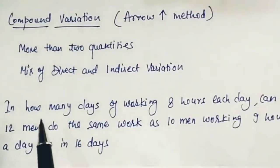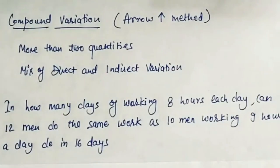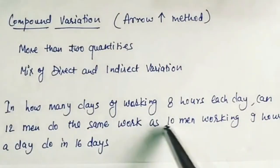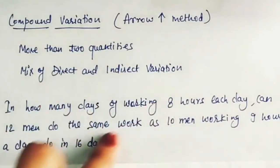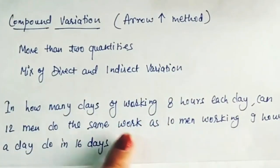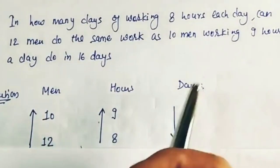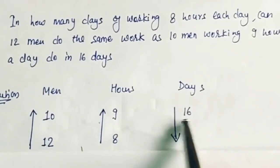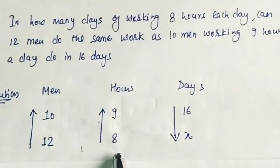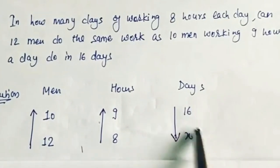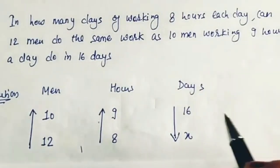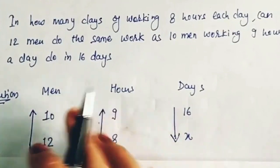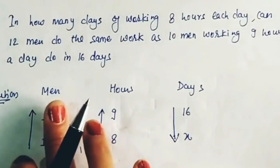The next question is: in how many days, working 8 hours each day, can 12 men do the same work as 10 men working 9 hours a day for 16 days? Here three quantities are clearly mentioned: hours, men, and days. We note down: 10 men working 9 hours a day complete the job in 16 days. We need to find how many days 12 men working 8 hours will take.